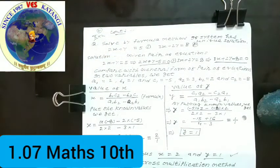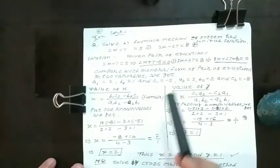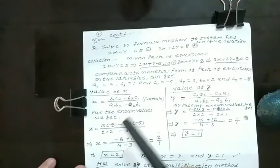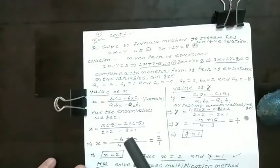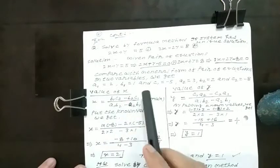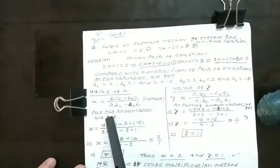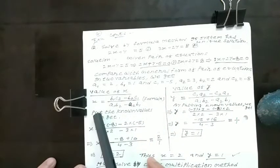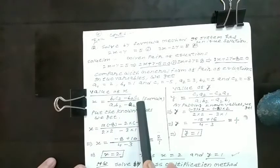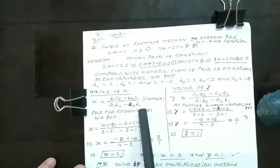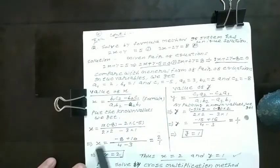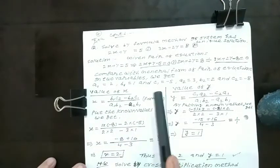We check that a1 upon a2 is not equal to b1 upon b2, therefore it has a unique solution. Now, comparing the value of x with the formula method: x equals b1c2 minus b2c1 upon a1b2 minus a2b1. Put the known values. What is b1? B1 is 1, c2 is minus 8.